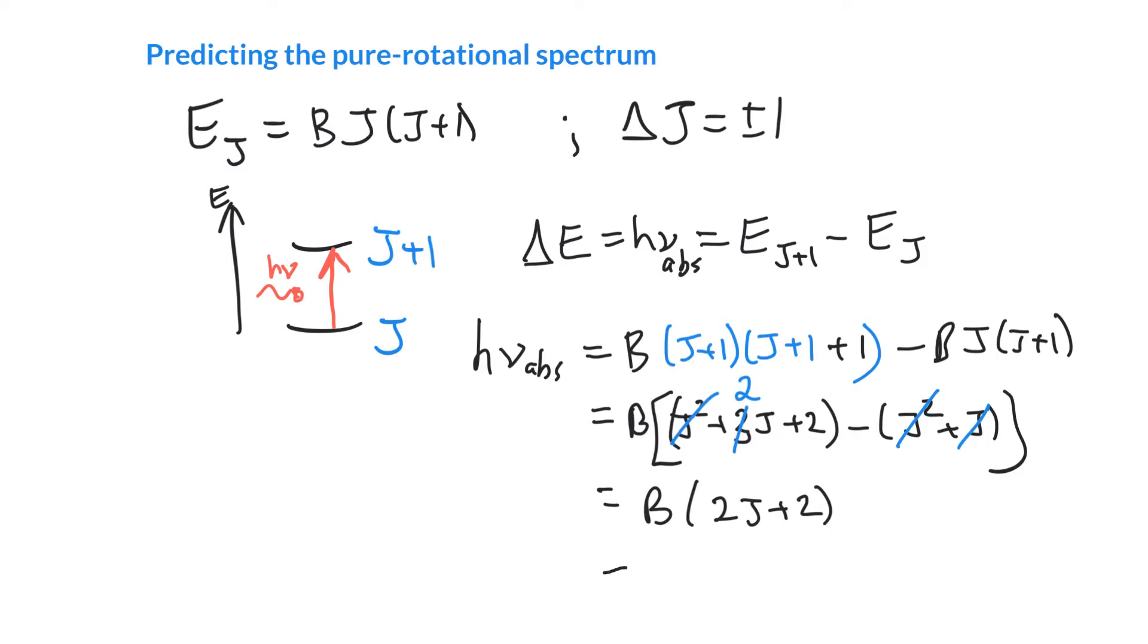We can bring that factor of 2 out and write that as 2B(J+1). So that's equal to hν for absorption. If we're just interested in the frequency of absorption, that's 2B over h times (J+1).